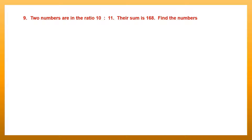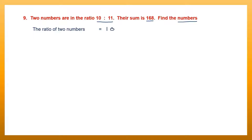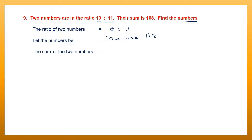Question 9. Two numbers are in the ratio 10 is to 11. Their sum is 168. Let's find the numbers. The ratio of two numbers is 10 is to 11. Now let the numbers be 10x and 11x. The sum of those two numbers is 168, that means 10x plus 11x equals 168. 10 plus 11 is 21, so 21x equals 168.